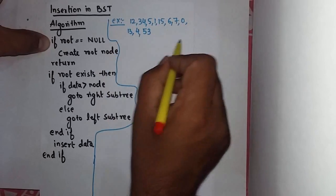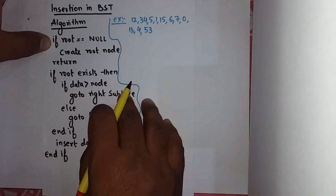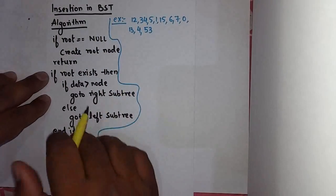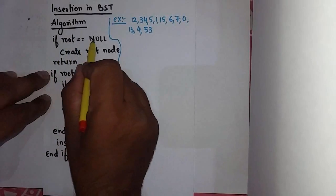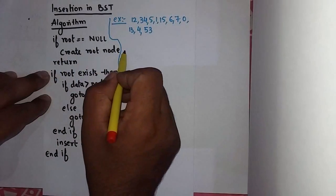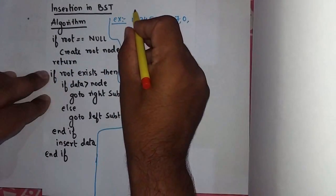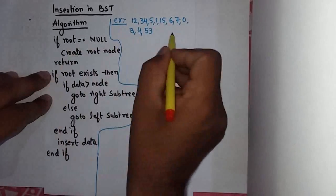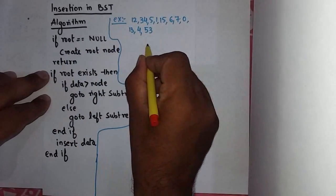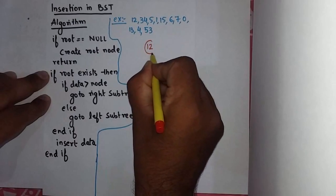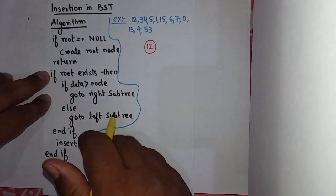In elements say binary search tree I have to create. Now see how we'll do this. If root is equal to null, create root node and return. First I have to enter 12. There is no root, so I will create root node with 12. Clear?